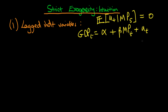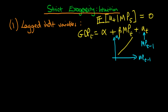The problem is that monetary policy at time t likely has some sort of effect on GDP in the future. Because of that, we can think of the error at time t as containing some sort of monetary policy at time t minus one. So there is going to be some positive correlation between the error at time t and monetary policy at time t minus one, which gives us a violation of the strict exogeneity condition, and we know that beta hat OLS will actually be biased.